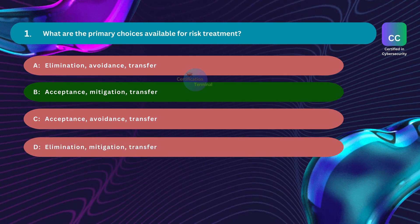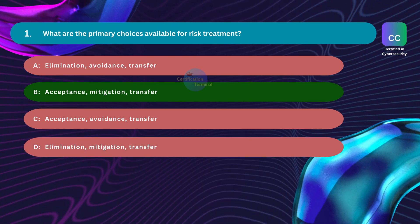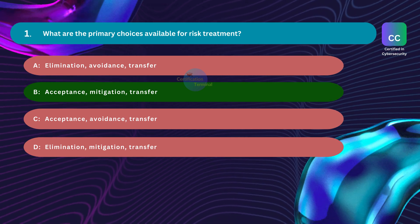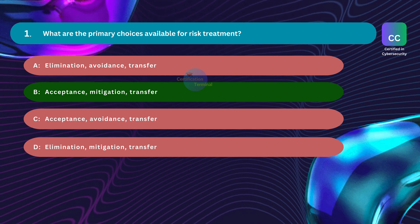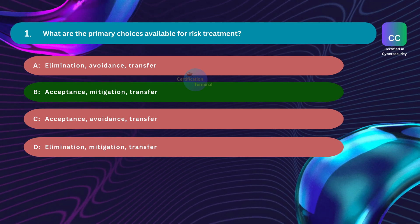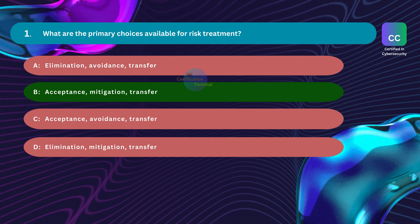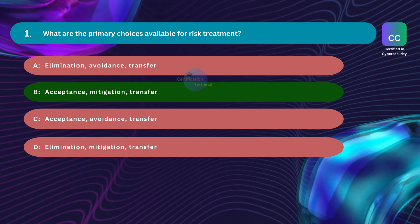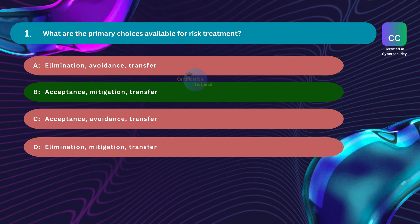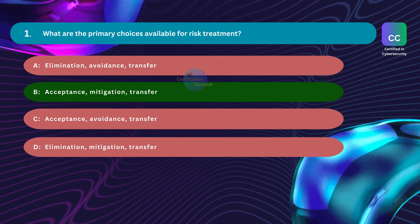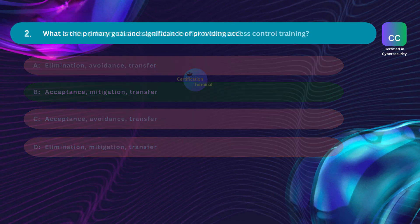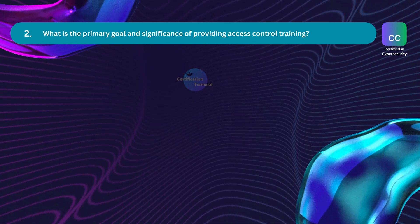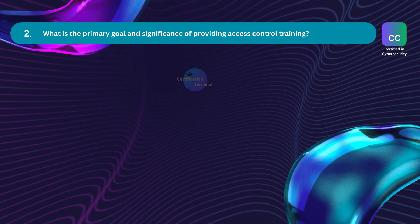Option D, elimination, mitigation, and transfer, is incorrect. Elimination involves completely removing the risk, which may not always be possible or practical. Mitigation is a valid risk treatment option that involves reducing the impact or likelihood of the risk. Transfer is also a valid strategy. However, this option is not as comprehensive as it lacks acceptance.